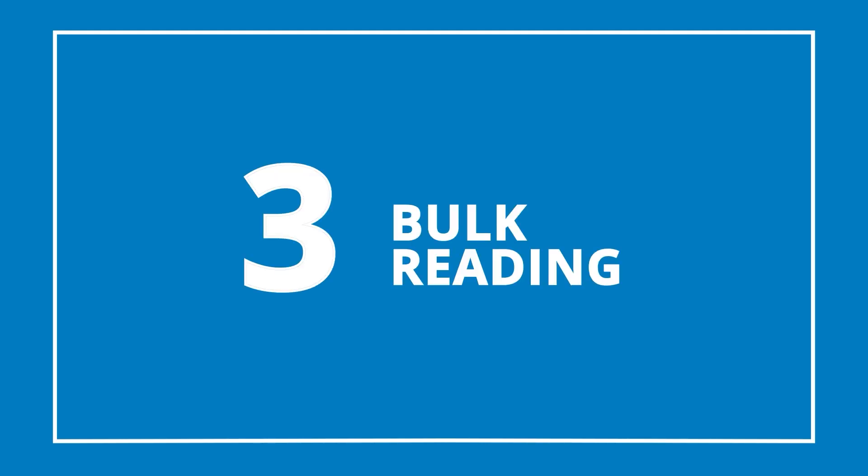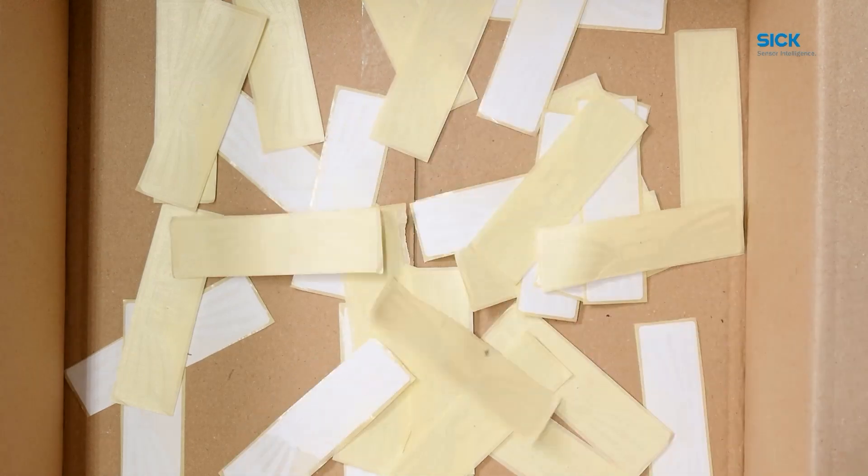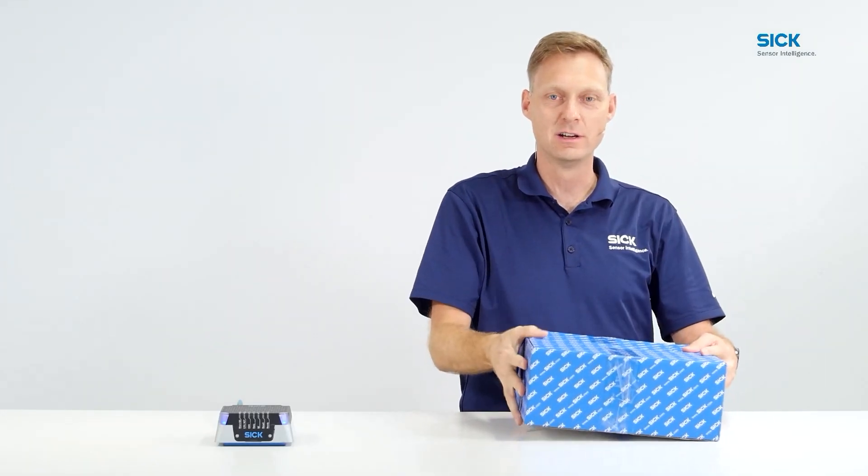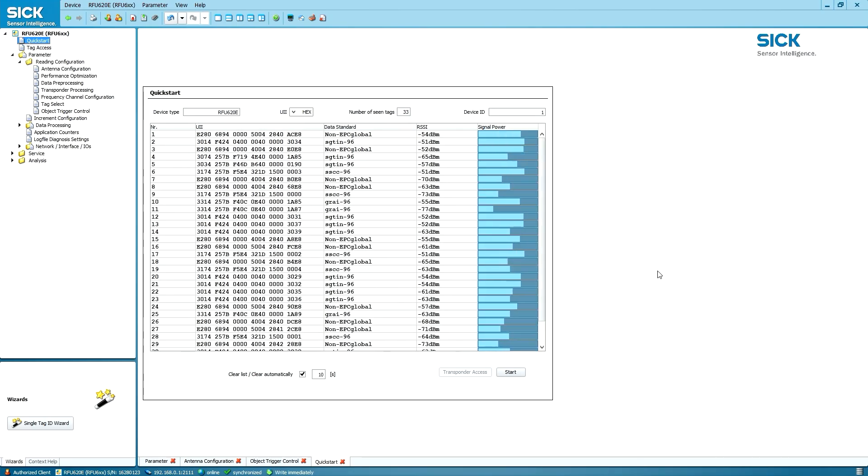Third, bulk reading. The capability of reading hundreds of tags within a second is called bulk reading. This is for instance necessary when identifying dozens of tagged objects in a cardboard box.